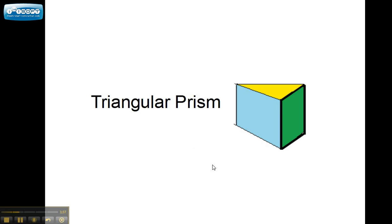This is called a triangular prism. As you can see, there's a triangle right here. These are rectangles, but this side makes it into a triangle. So it is a triangular prism.